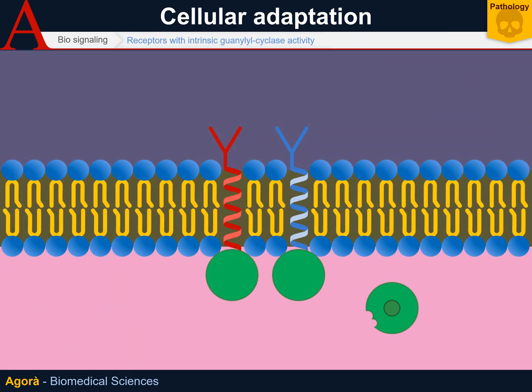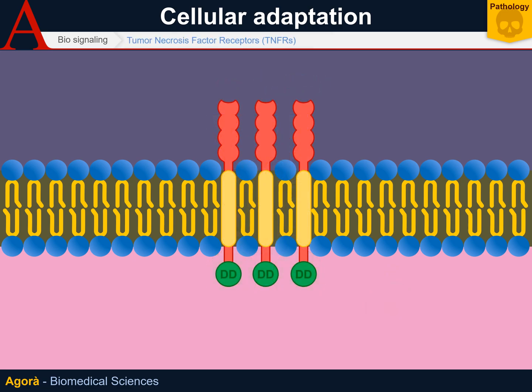There are also some less known classes of receptors, among which we can find the receptors of intrinsic guanylyl cyclase activity. These receptors are capable of converting GTP into GMP, and this conversion occurs inside the same receptor. Since they are not so common, the ligands known for these receptors are few. Atrial natriuretic peptide is one of the ligands of these receptors. Similarly, guanylin and bacterial endotoxin bind this type of receptor. Nitric oxide, or NO, also has this type of receptor, but since nitric oxide passes through the membrane easily, it is fully cytoplasmic. These receptors cyclize GTP and convert it into GMP, and then GMP will act as a second messenger, likewise cAMP.